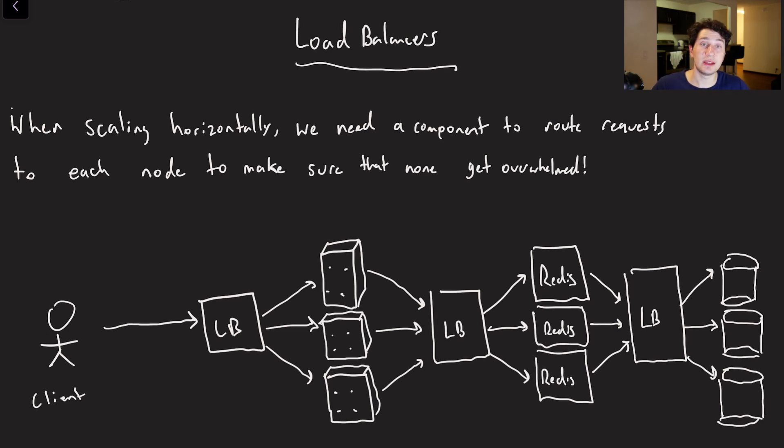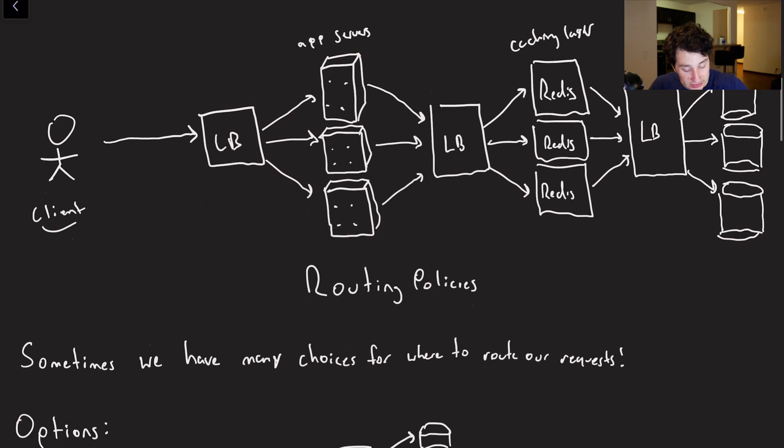So it can actually sit between pretty much any two layers of our application. As you can see right here, we've got a client, we've got some app servers, and we've got a load balancer between them. Between the app servers and our caching layer, we're going to need a load balancer there, because which cache are we actually going to? And then finally, between our caching layer and our actual databases themselves, we're also going to need one more load balancer. Because again, that request can go to any of those databases, we want to do so intelligently. And the load balancer is ultimately going to help us do that.